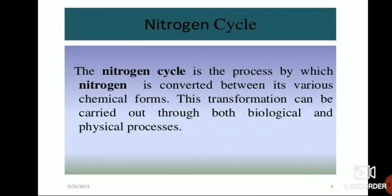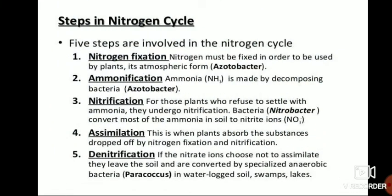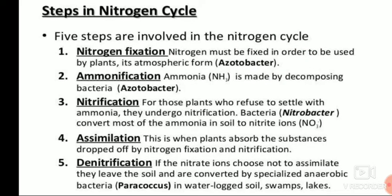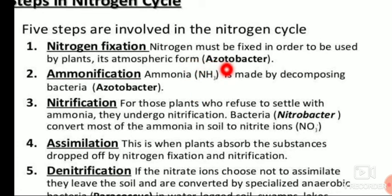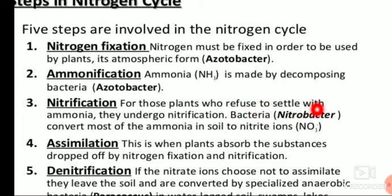Next: the nitrogen cycle. The nitrogen cycle is the process by which nitrogen is converted between its various chemical forms. This transformation can be carried out through both biological and physical processes. Steps in the nitrogen cycle — five steps. First: nitrogen fixation. Nitrogen must be fixed in order to be used by plants; nitrogen in the atmosphere is fixed by autotrophic bacteria. Second: ammonification. Ammonia is made by decomposing bacteria. Third: nitrification. For plants that refuse to settle with ammonia, bacteria convert most of the ammonia in soil to nitrite ions (NO₃⁻).